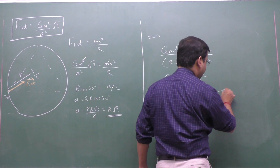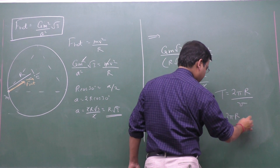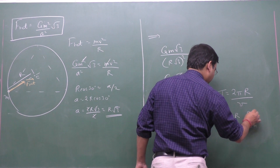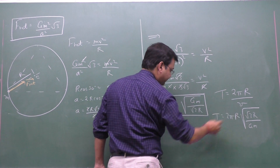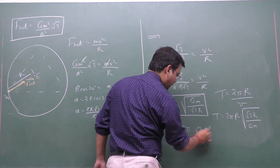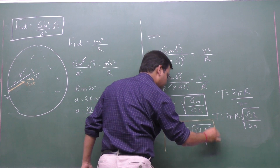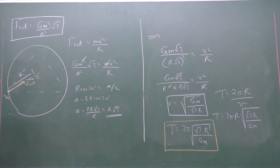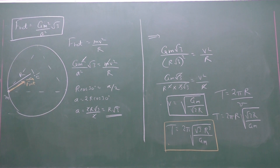To find the time period, we apply T = 2πR/v. Substituting the speed, T = 2πR / √(GM/√3·R), which simplifies to T = 2π·√(√3·R³/GM). This is the expression for the time period when three identical particles move in a circle of radius R under mutual gravitational force.